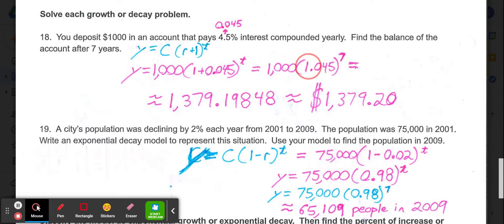So you do 1.045 to the 7th power, then multiply it by 1,000. And what that gives us is this big long decimal. Rounding that to the nearest cent would be $1,379.20.